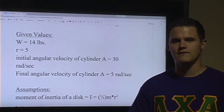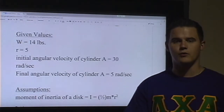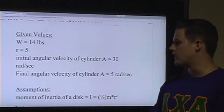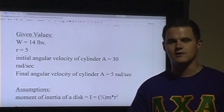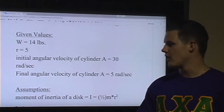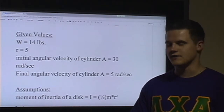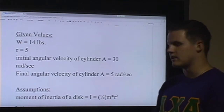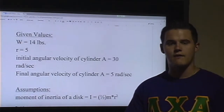First, we're going to start with our givens and our assumptions. We know that our two cylinders have a weight of 14 pounds and a radius of 5 inches, along with the initial angular velocity of cylinder A being 30 radians per second. We also know that our final angular velocity will be 5 radians per second, and we assume the moment of inertia of a disk is I = ½mR².